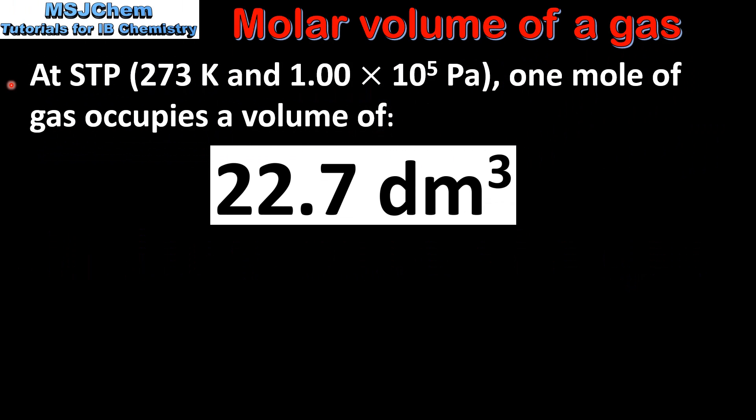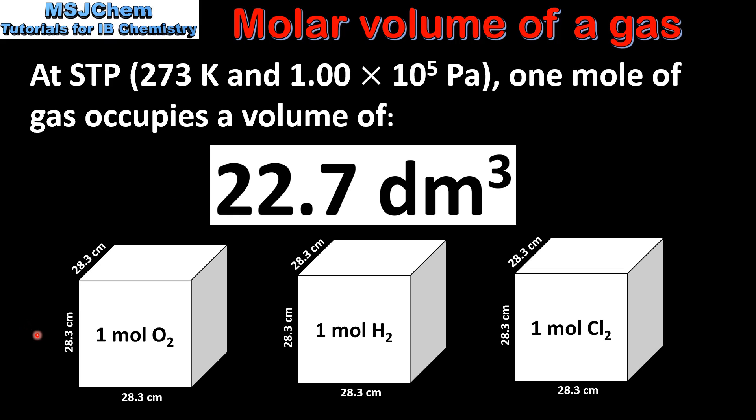At STP, which is standard temperature and pressure, one mole of a gas occupies a volume of 22.7 decimeters cubed. So at standard temperature and pressure, one mole of oxygen or one mole of hydrogen or one mole of chlorine gas will occupy a volume of 22.7 decimeters cubed.